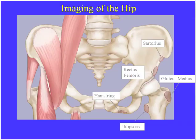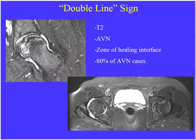Moving to the lower extremity — reviewing anatomy and avulsion fracture insertion sites: anterior superior iliac spine is the sartorius; anterior inferior iliac spine is the rectus femoris; gluteus medius inserts on the greater trochanter; lesser trochanter is the iliopsoas; hamstrings insert on the ischial tuberosity. They show these avulsion injuries on plain film or MR and ask what tendon is avulsed. The double line sign is also seen in the femoral head — a geographic area with a black line and parallel white line is diagnostic of avascular necrosis.